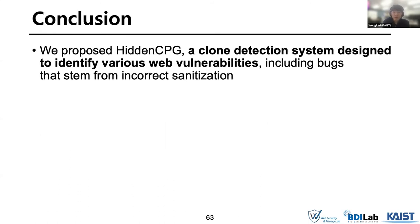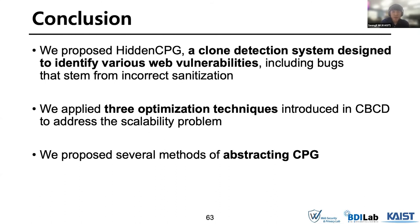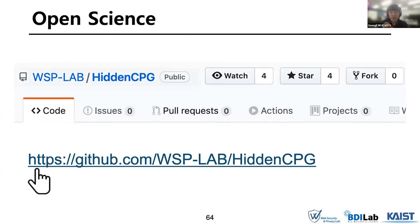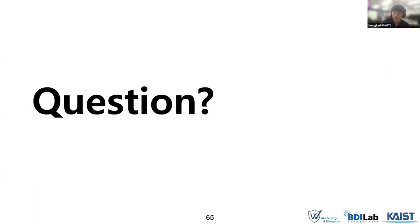In conclusion, we proposed HiddenCPG, a clone detection system designed to identify various vulnerabilities. To increase the efficiency of subgraph matching, we applied three optimization techniques introduced in CVCD and several methods to abstract CPGs. HiddenCPG found about 2,000 potential web vulnerabilities, including 89 confirmed bugs. We have opened our source code of the clone detection tool on GitHub to boost future research, so if you want to utilize our framework, please visit our repository. Thank you very much, and I'll be happy to take any questions.